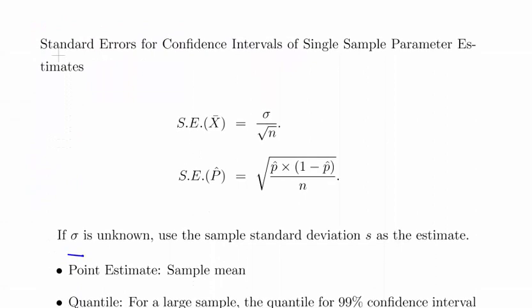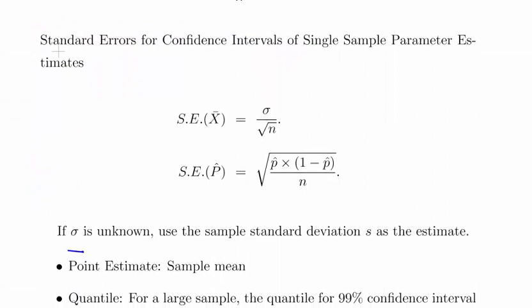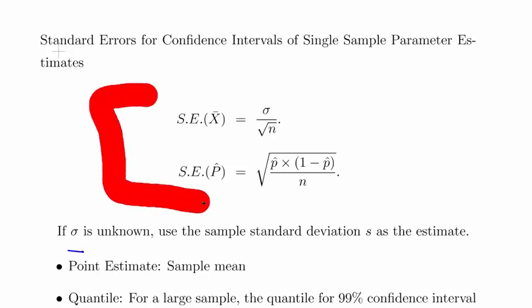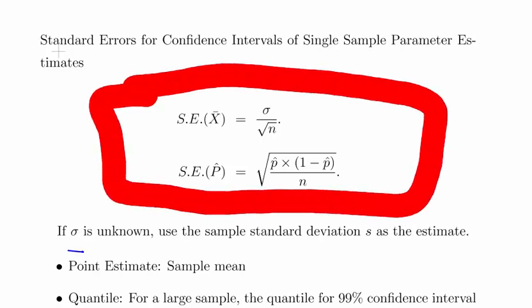So we'll move down to the standard error, which is the third part. Standard errors for confidence intervals of single sample parameter estimates. So essentially these are two formulas here. But essentially it's this one here in particular. So this is proportions, we're not dealing with this one. We are dealing with this one here. This is the mean here. Now it's sigma divided by the square root of n, so this is the correct formula.